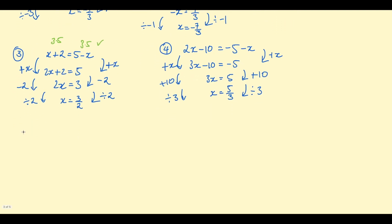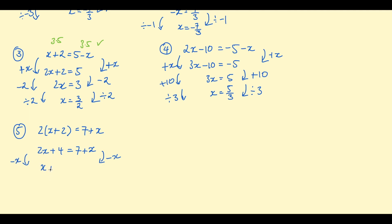Now let's look at an example with brackets and unknowns on both sides: 2 times (x plus 2) equals 7 plus x. The coefficient is 2 — does it divide the right hand side evenly? 7 divided by 2 is not a whole number, so expand the brackets first: 2x plus 4 equals 7 plus x. Then subtract x from both sides so all unknowns are on the left: 2x take x is x plus 4, and 7 plus x take x is just 7.